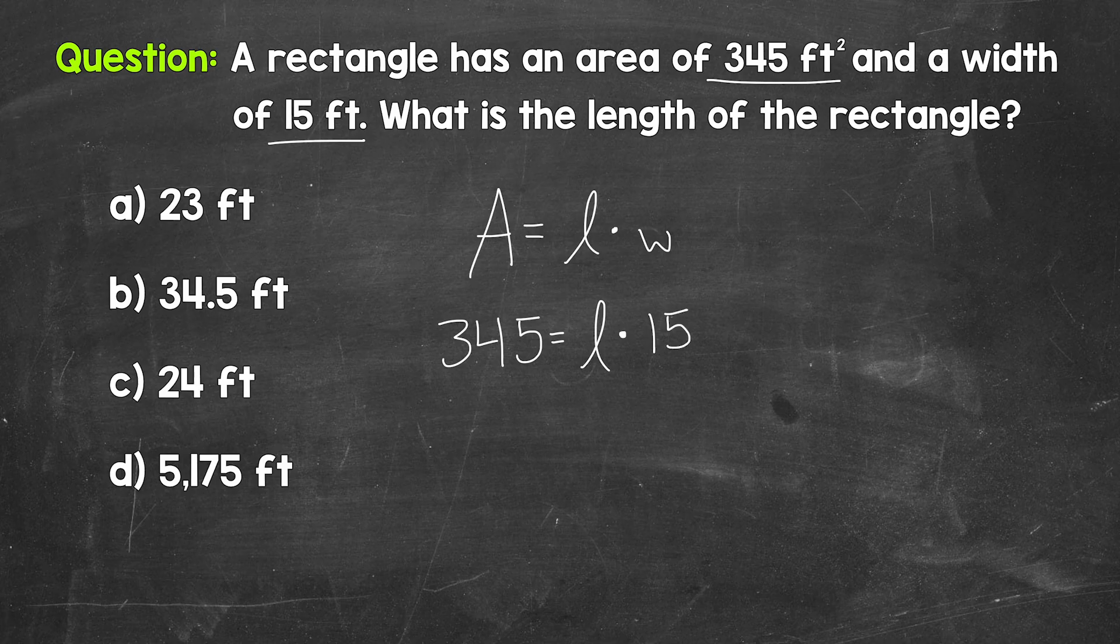So our unknown length times 15 needs to equal 345. So what number times 15 equals 345? If we have numbers that we can figure out using mental math, go ahead and do so. But here we're going to go through this and figure this out by solving this one step equation. Because I'm not sure what number times 15 will give us that area of 345. So we need to work this out.